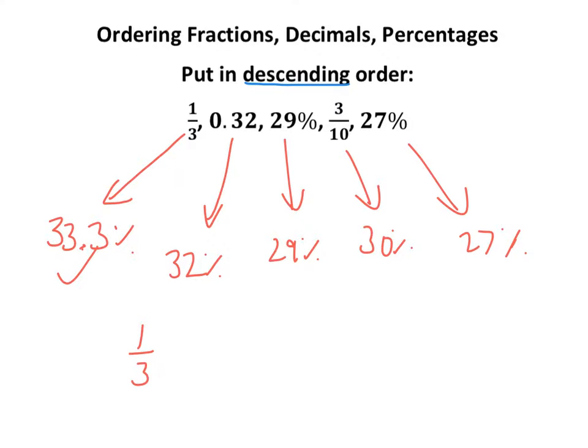So I'm going to tick them off as I go. Then I'm going to go 0.32. Then it's 3 tenths. Then it's 29%. And then all I've got left is 27%.